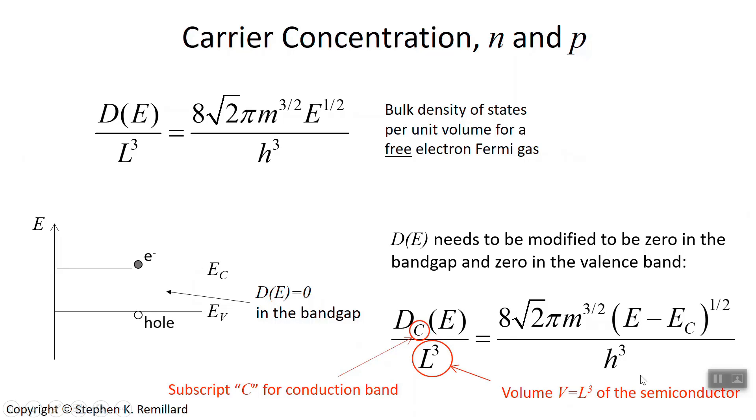I've added the subscript c to mean the density of states in the conduction band. And again, we're dividing out the volume of the semiconductor, which would just take to be some cube of L by L by L dimension. So the density of states per unit volume for the electrons in a semiconductor is similar, but just with this modification from the metallic case.